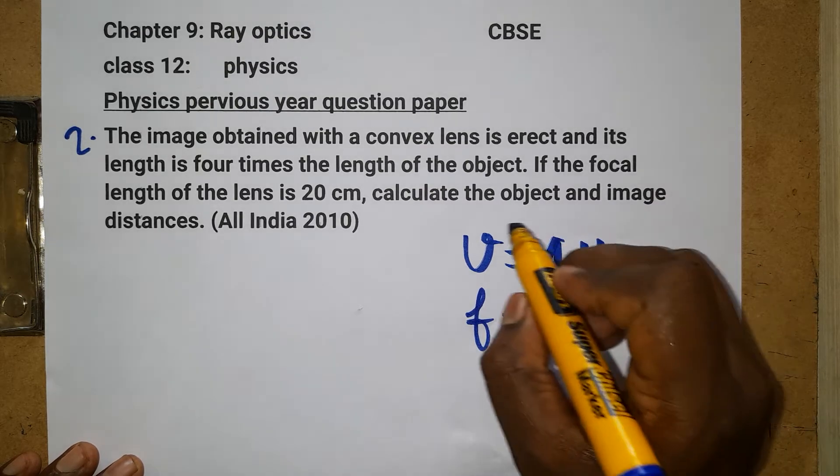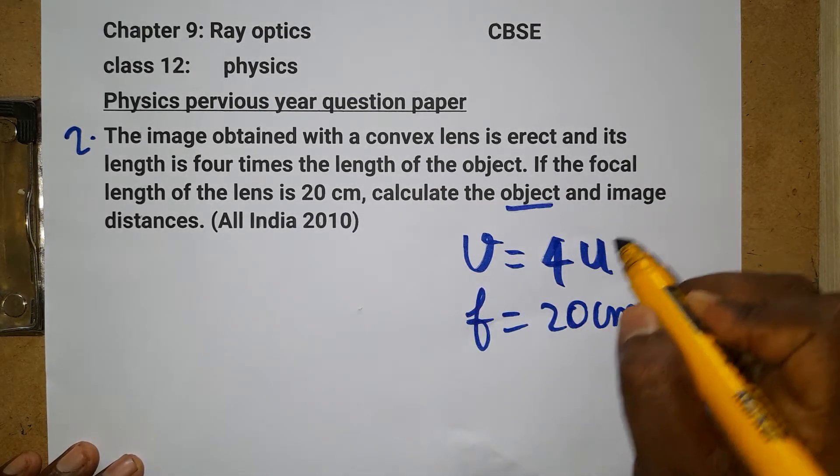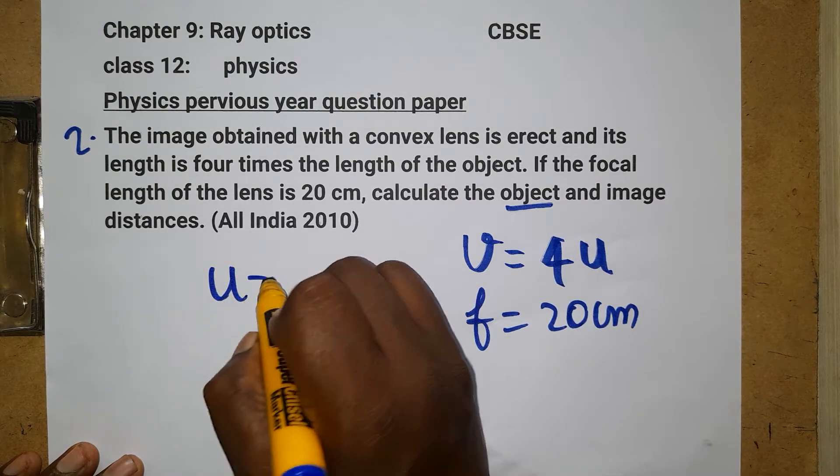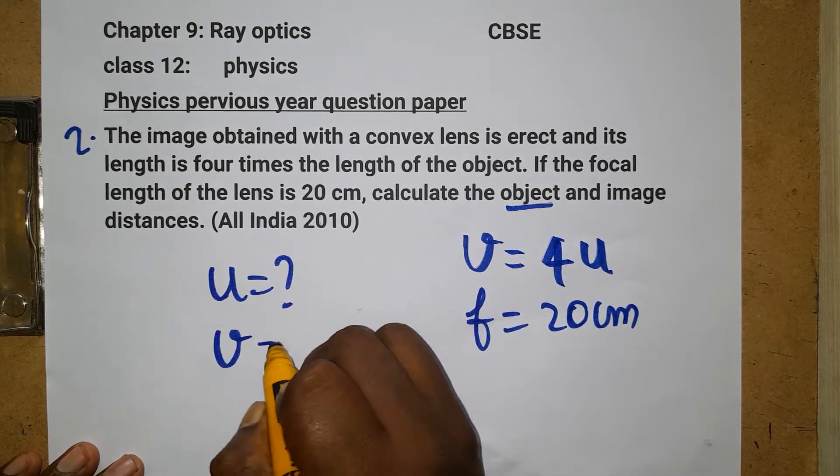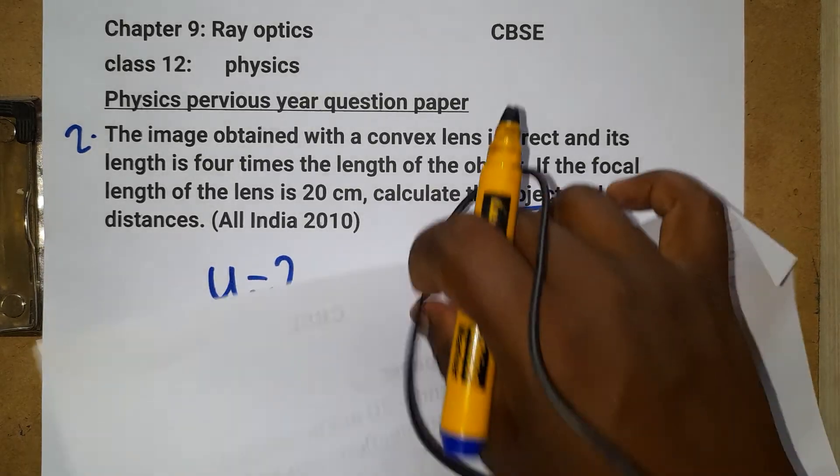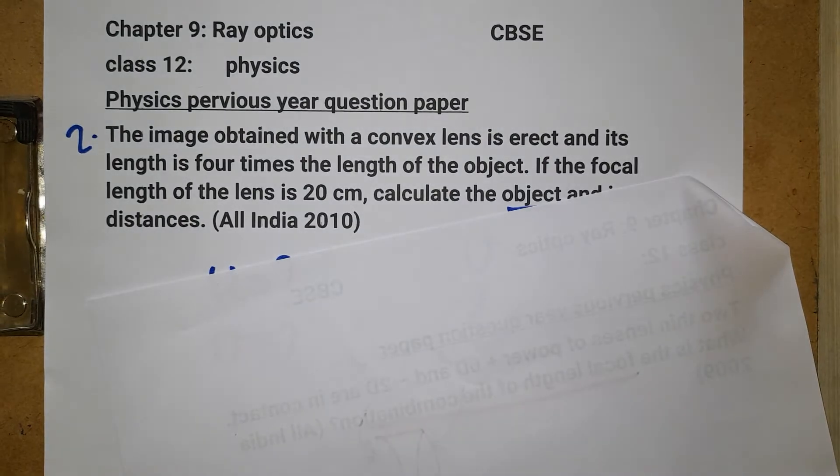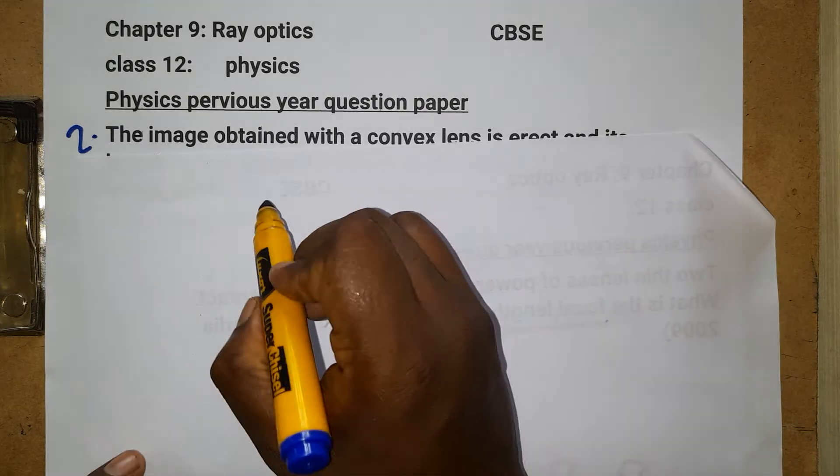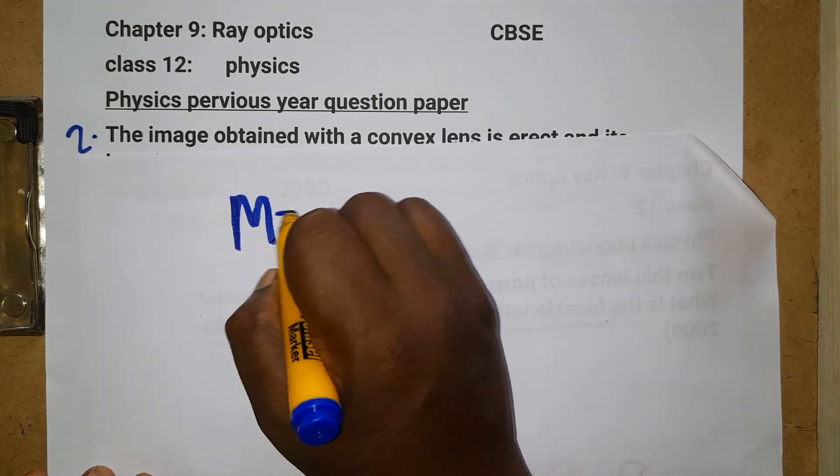I am going to solve this problem. Before solving, it is easy. You can go directly with the solution. First thing is magnification. The formula which is going to relate u and v: m is equal to v by u.